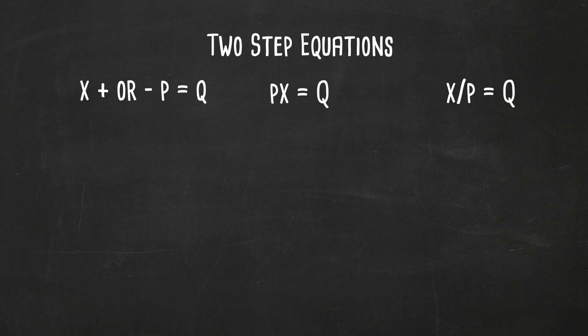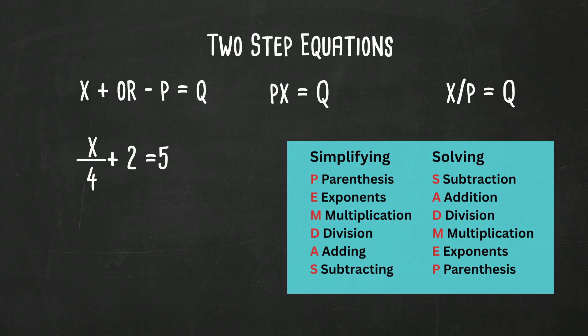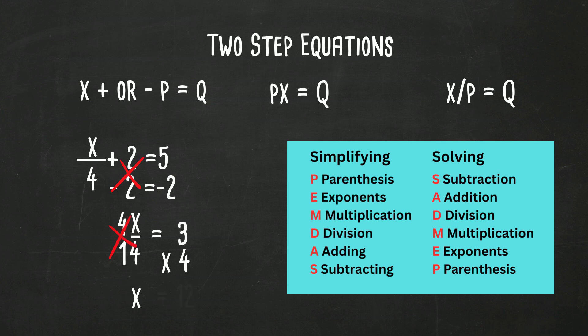Finally, we have a problem with a fraction: x over 4 plus 2 equals 5. Again, we're going to start with the addition. Remember SADMEP. So we'll subtract 2 from both sides. The 2's cancel, and 5 minus 2 is 3. So now we have x over 4 equals 3. The 4 is on the bottom, which means it's division. So to undo division, we're going to multiply both sides by 4. The 4s cancel, and 3 times 4 is 12. So x is equal to 12.